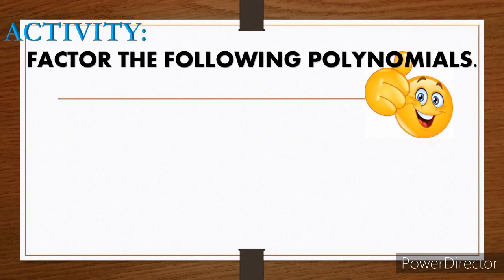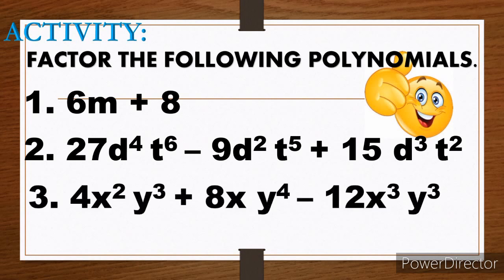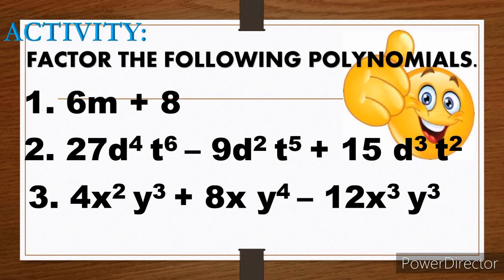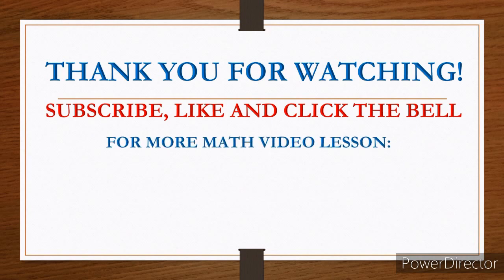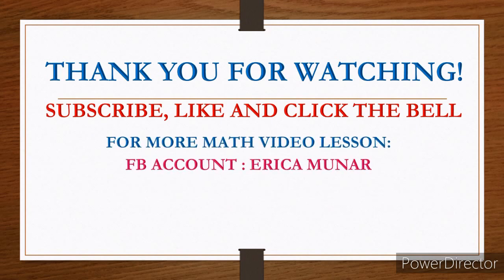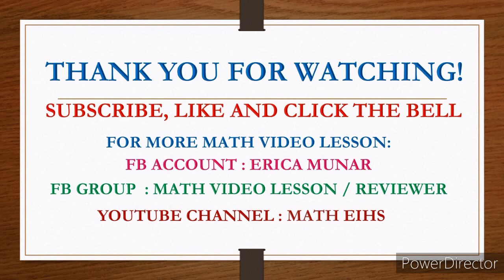I think you are ready. This is for your activity: factor the following polynomials. Number 1: 6m + 8. Number 2: 27d⁴t⁶ − 9d²t⁵ + 15d³t². Number 3: 4x²y³ + 8xy⁴ − 12x³y³. Good luck and thank you for watching! Please subscribe, like, and click the bell for more math video lessons. FB account: Erika Monar, FB group: Math Video Lesson — A Reviewer, and YouTube channel: Mathish.